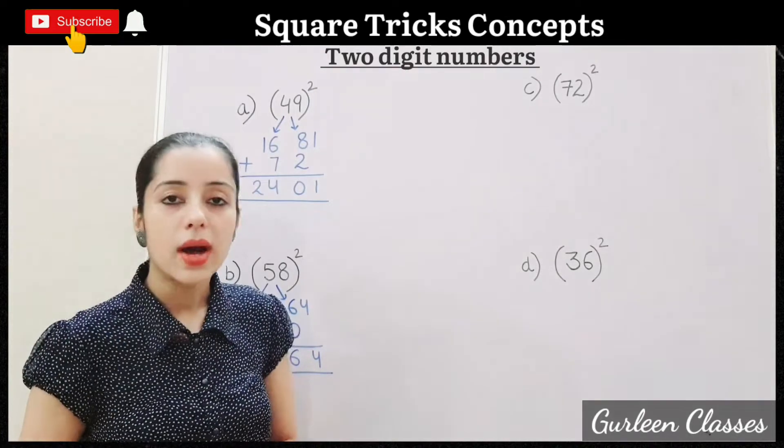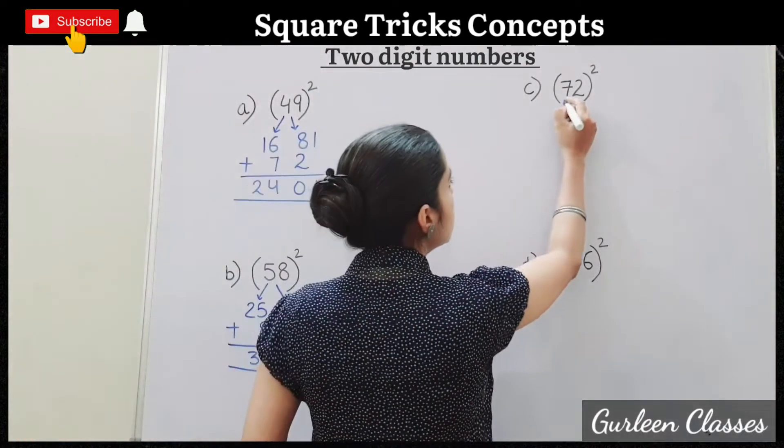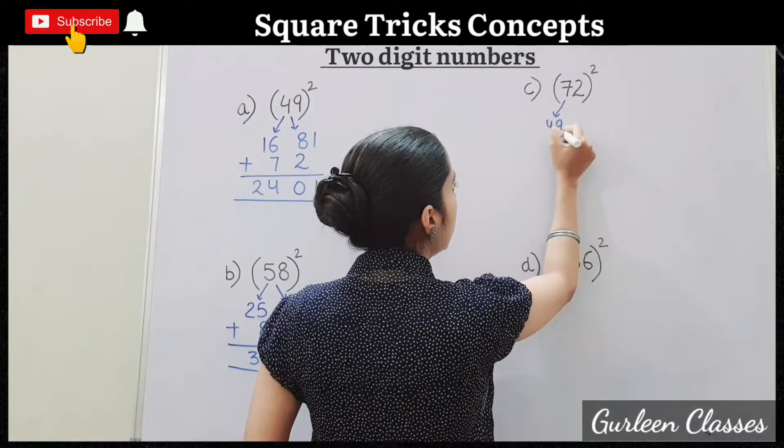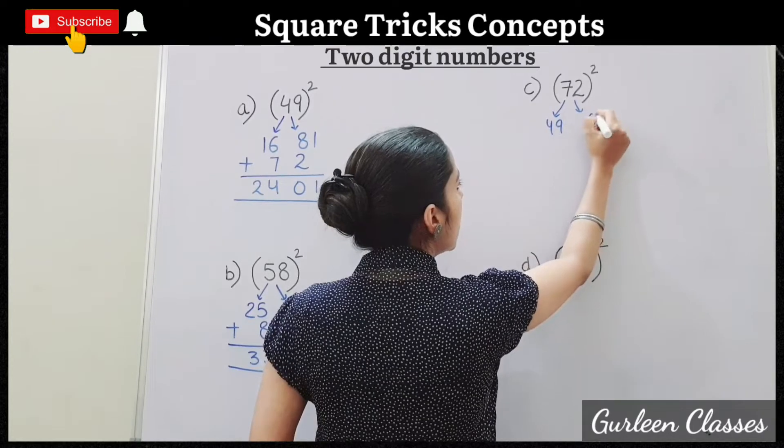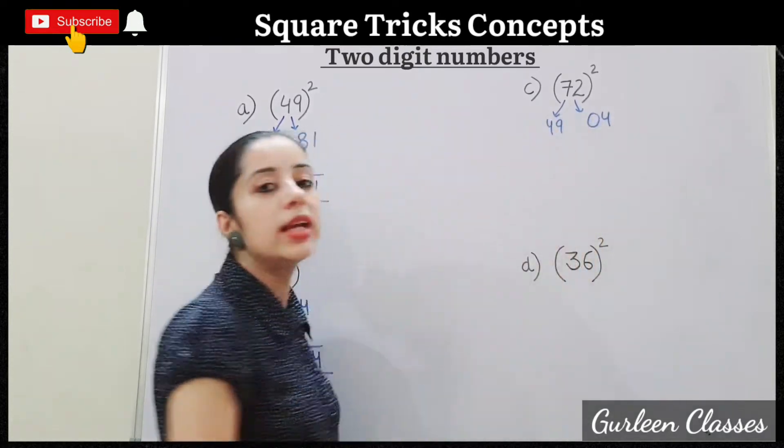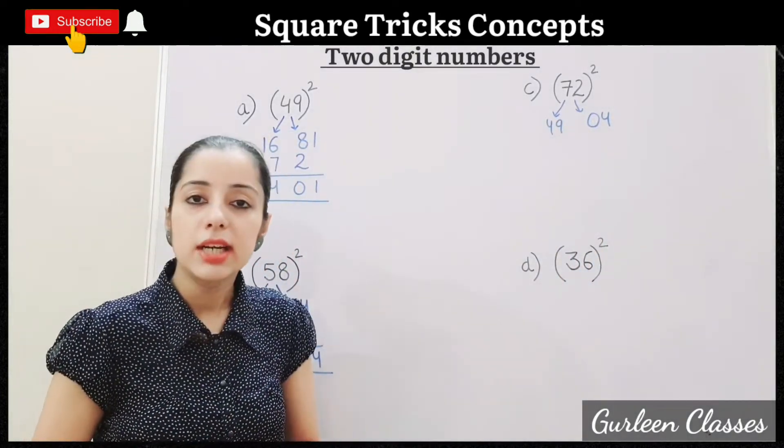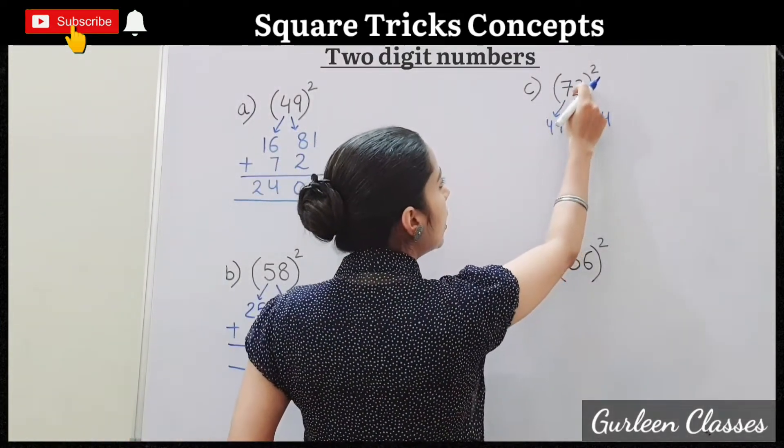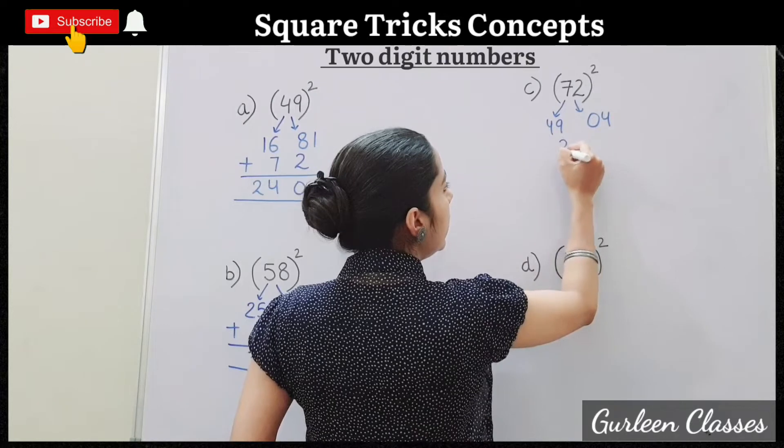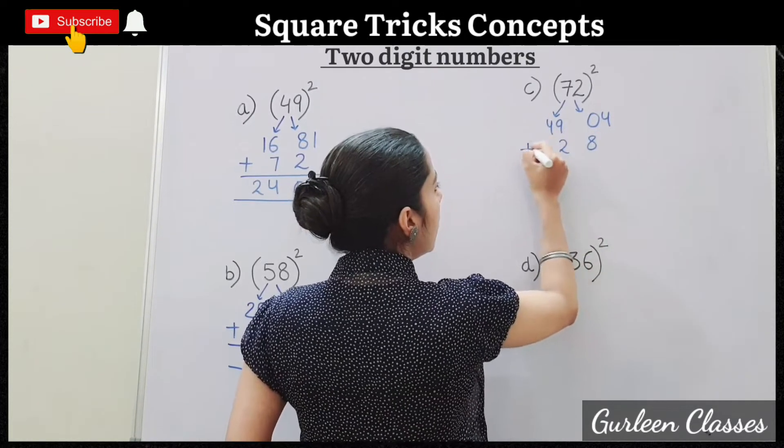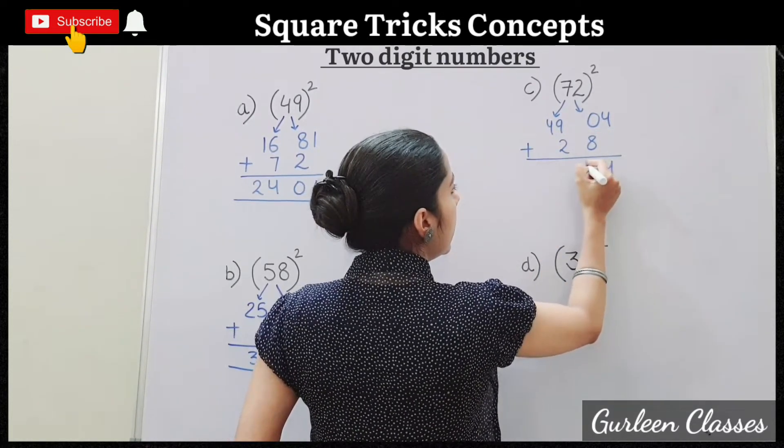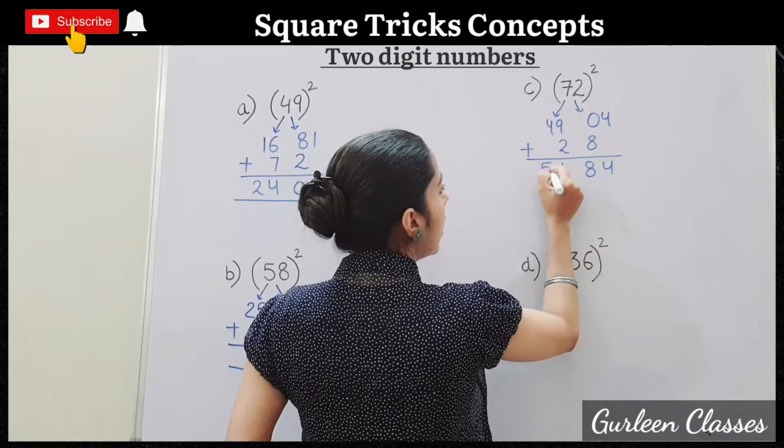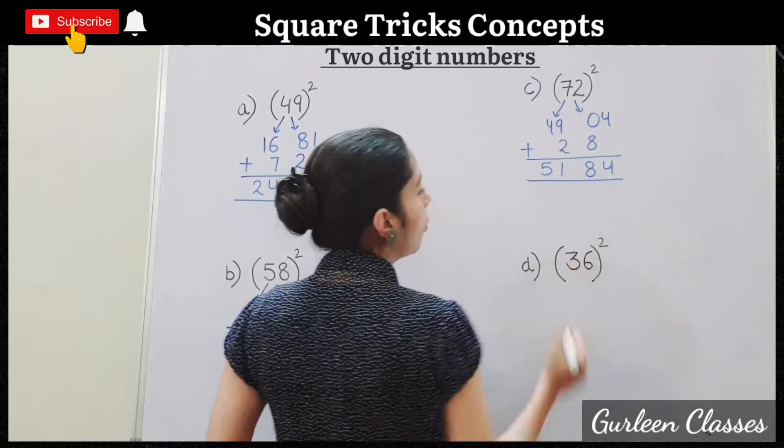C. 72 square. So 7 square is 7 sevens are 49. 2 square, 2 twos are 4. So here 4 is single digit. To make double digit we have put 0. So now multiply 7 twos are 14. 14 twos are 28. So now we will add 4, 8, 11, 5. Answer is 5,184.